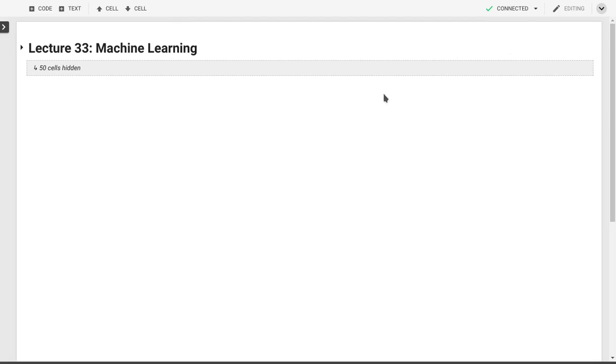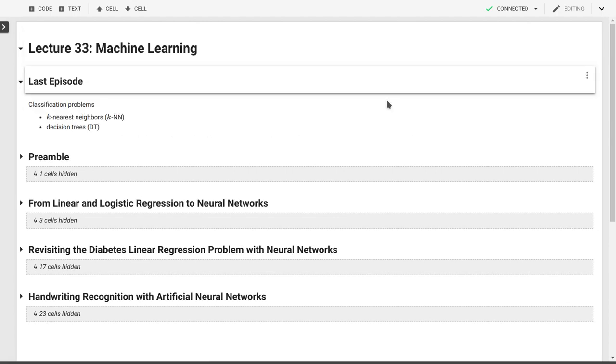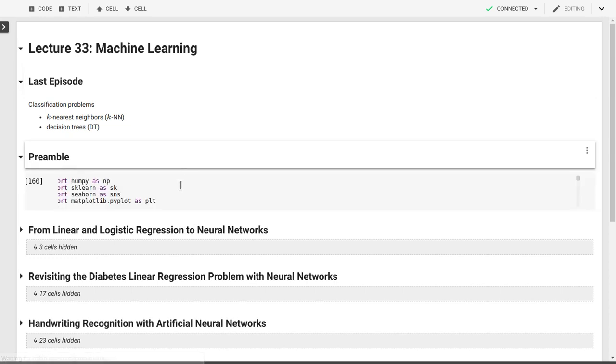So today we'll continue with our lectures on machine learning. Just to remind you what we did last time, we solved two classification problems based on the classification of iris flowers using k-nearest neighbors and decision trees. What we'll do today is transition from our linear and logistic regression, which are regression and classification problems, to a general approach that can solve both of those problems using neural networks.